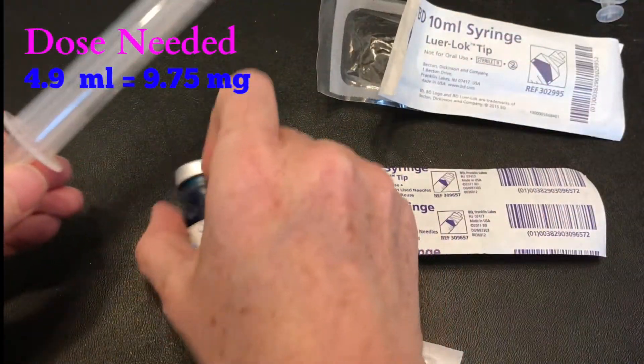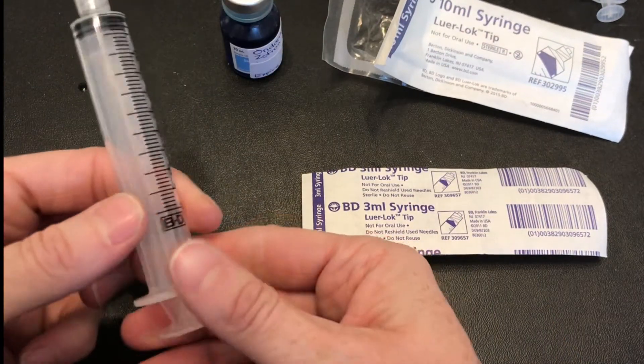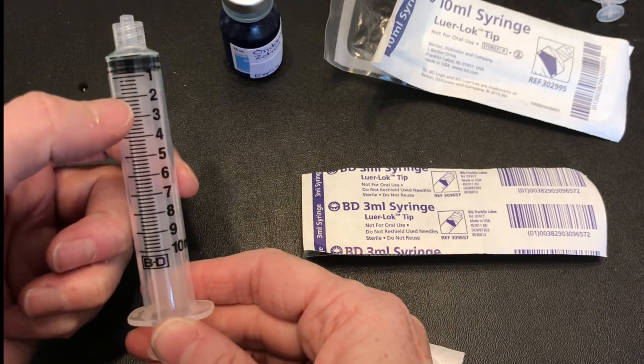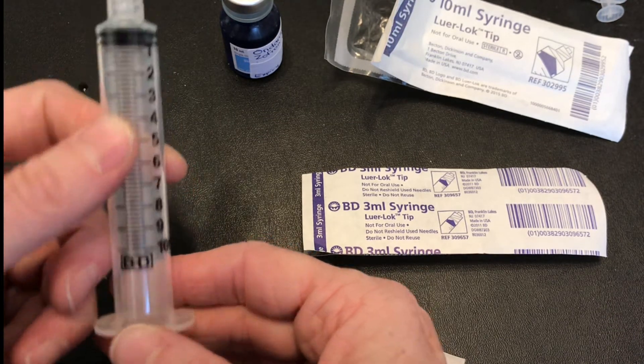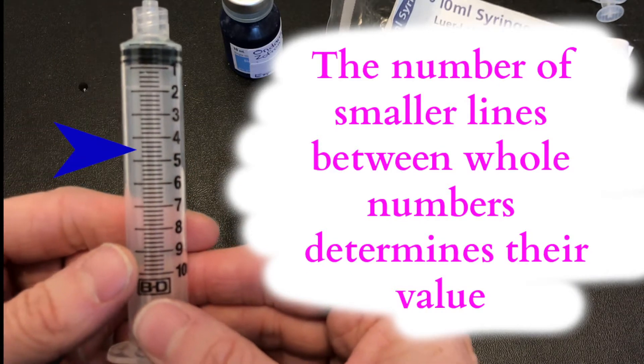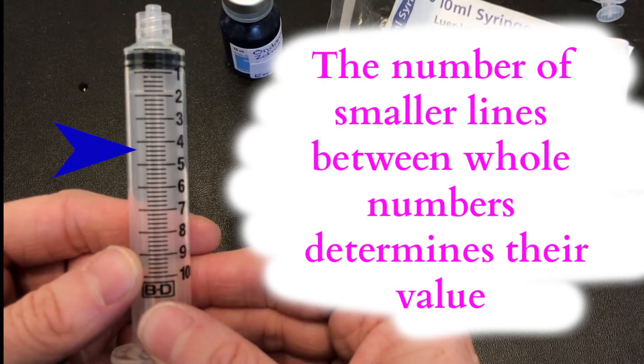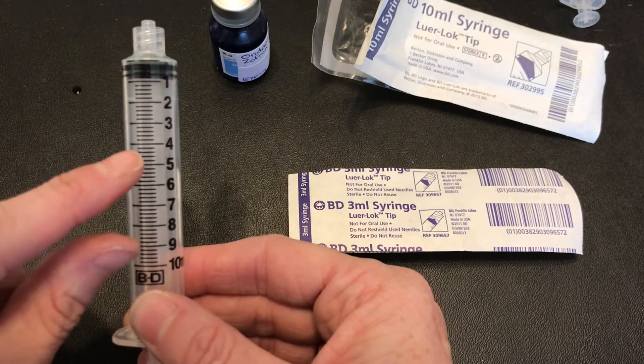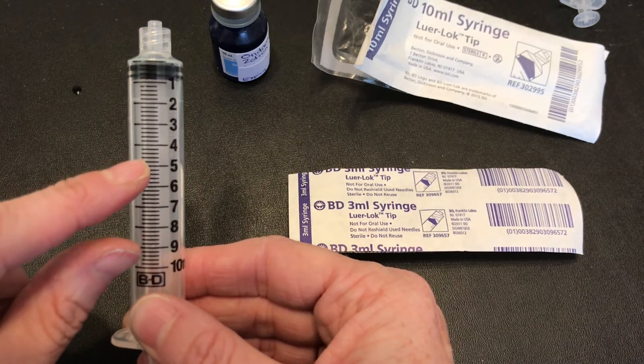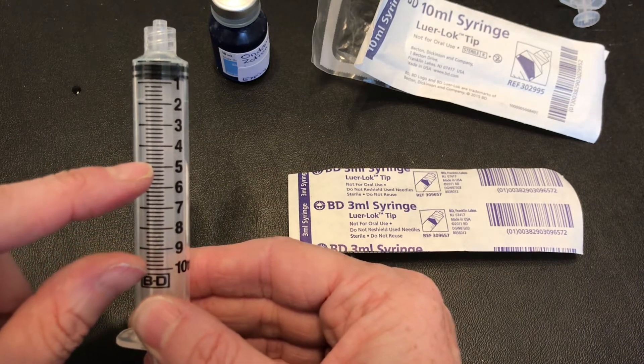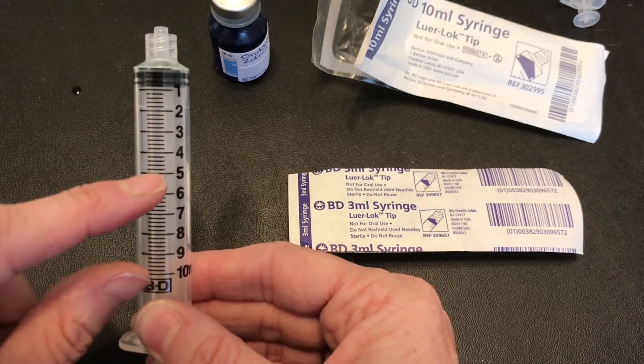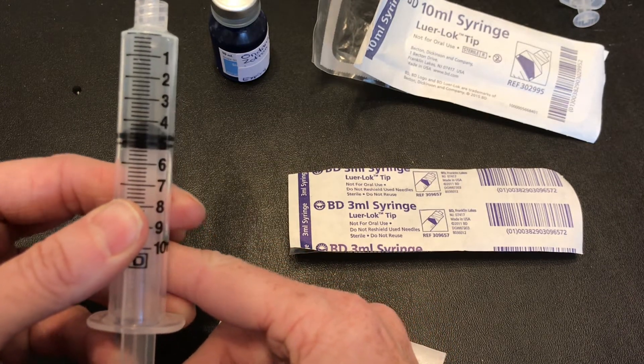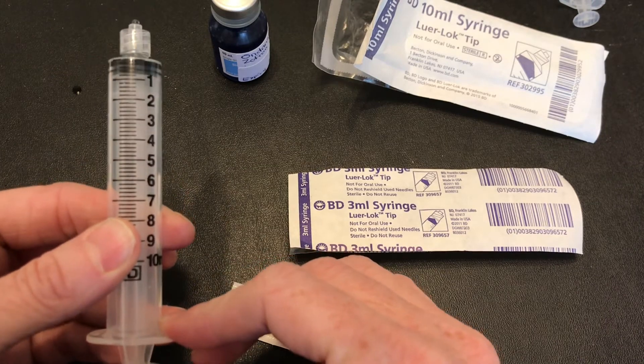First let's look at the 10 ml. When I look at the breakdown of units here I can see I've got 1 ml, 2 ml, 3 ml and then I've got these black lines in between. Now each one of those black lines represents 0.2 of a ml. So if I needed 4.9 I could accurately get 4.2, 4.4, 4.6, 4.8 and 4.9 comes somewhere between this black line and the 5 ml so it's going to be hard to get an accurate dose with this 10 ml so I'm not going to choose to use this one.